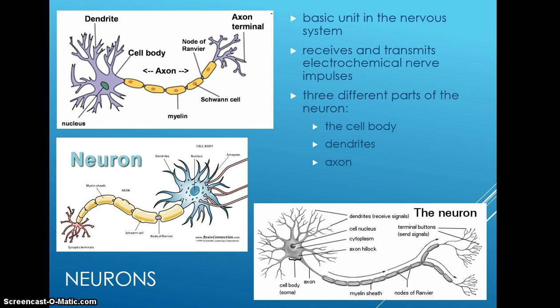Neurons are the basic unit in the nervous system. They receive and transmit electrochemical nerve impulses. There are three different parts to the neuron: the cell body, the dendrites, and the axon. An axon is a long, thin process that carries impulses away from the cell body to another neuron or tissue. There is usually only one axon per neuron.